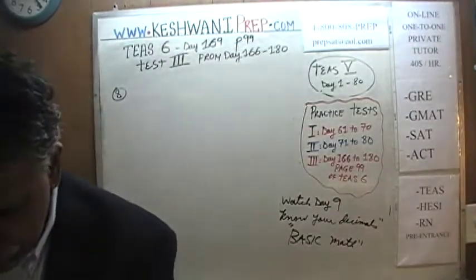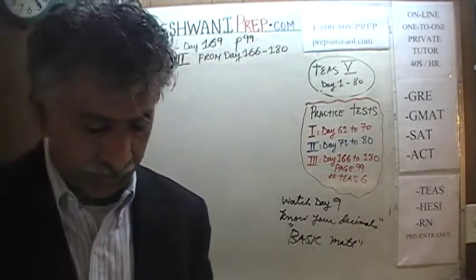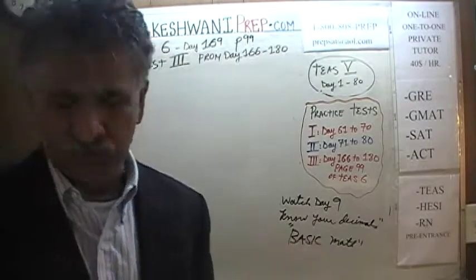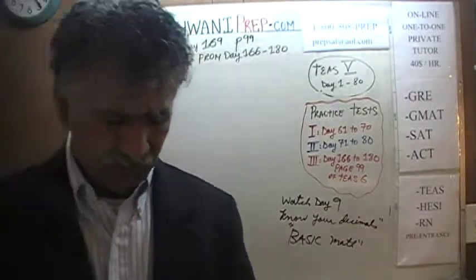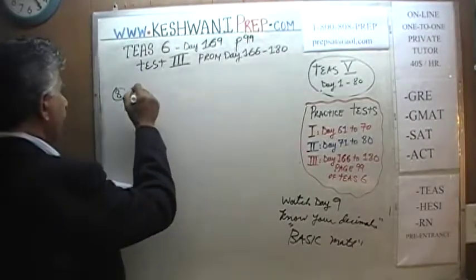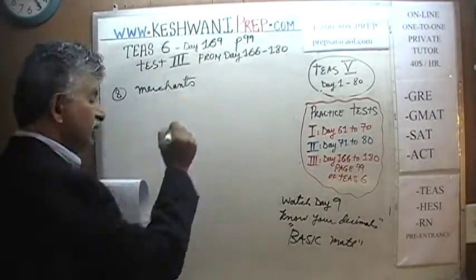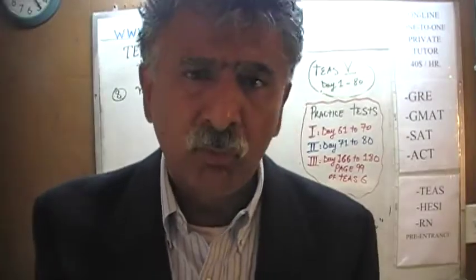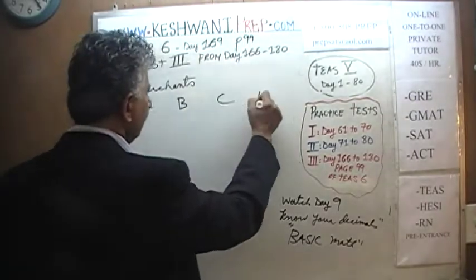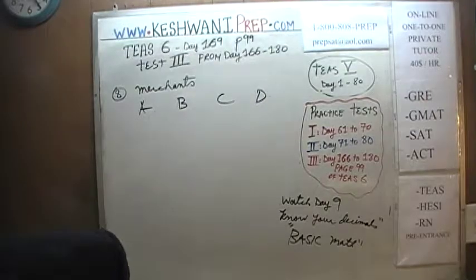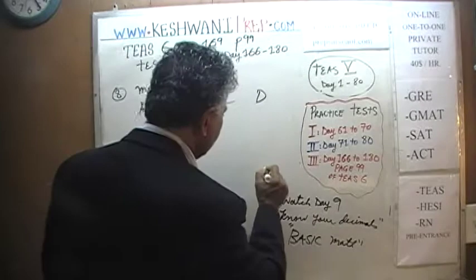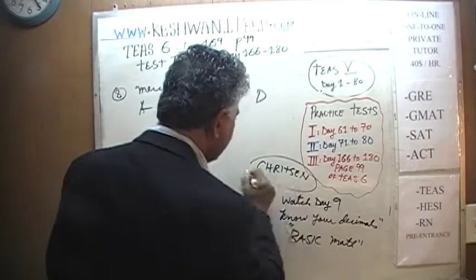In number 8 it's a very long question. A student is shopping for a new Smarty 360 PC laptop. We are comparing 4 merchants — 4 vendors, 4 websites, whatever you want to call them. We are going to give these 4 merchants names: A, B, C, and D.